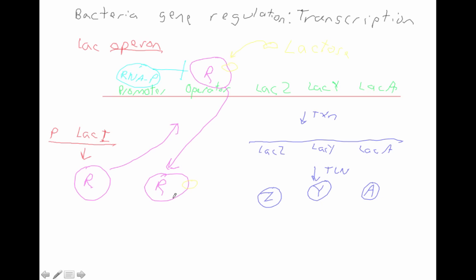With the repressor gone, the RNA polymerase — which is bound to the promoter — is no longer blocked. It can now go right through and transcribe lac Z, lac Y, and lac A. Once the lactose is completely metabolized, the lactose falls off the repressor because it's been metabolized. It's no longer bound to the repressor, and now the repressor can bind back to the operator, turning it off.